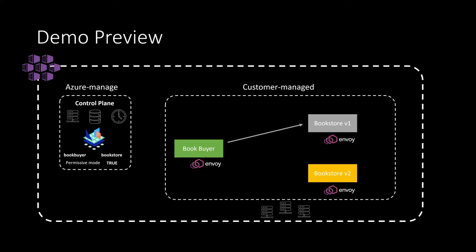We will then verify that the Book Buyer can still communicate to the Bookstore V1 service, and once we verify that, we will then change the permissive mode of OSM to be equal to false. In return, we should see from the logs that the Book Buyer will no longer be able to communicate to the Bookstore V1 service.